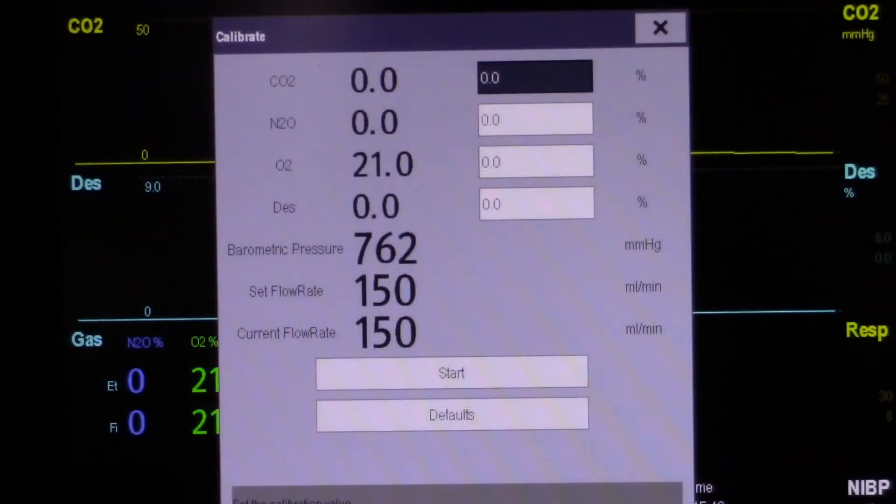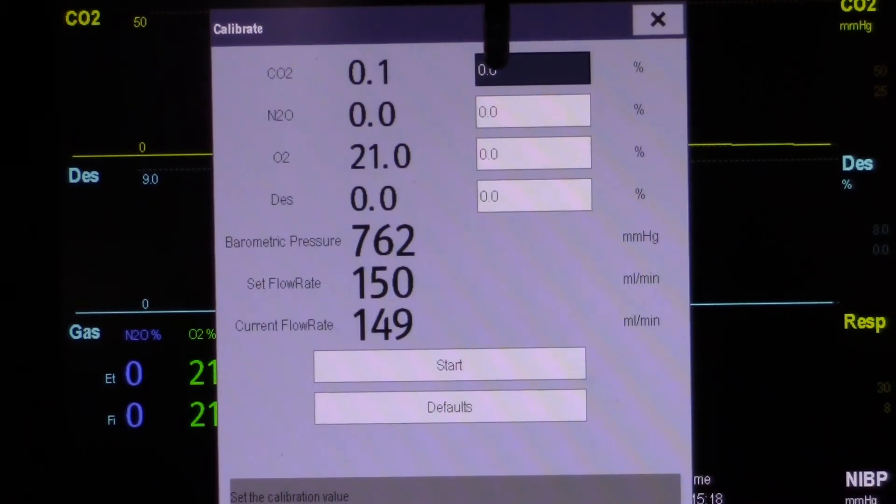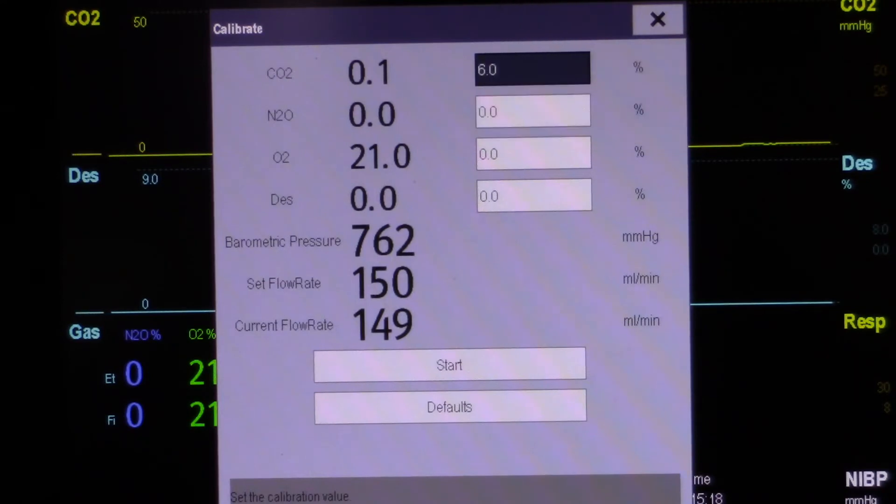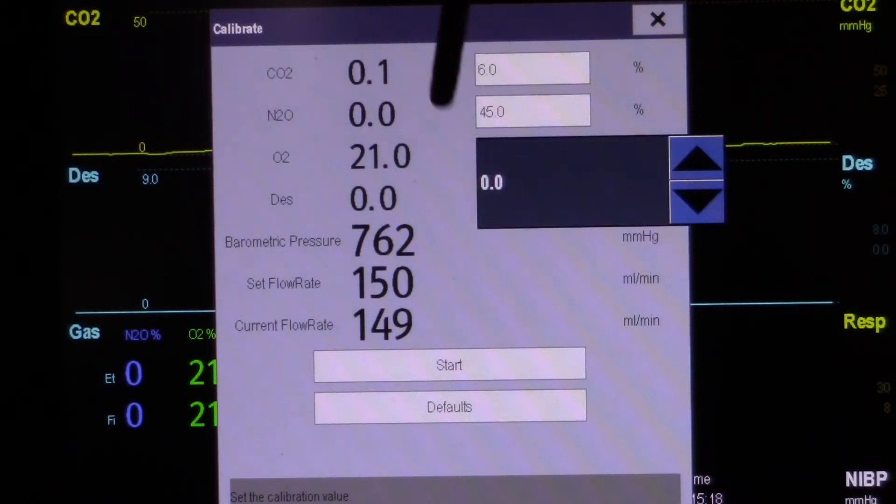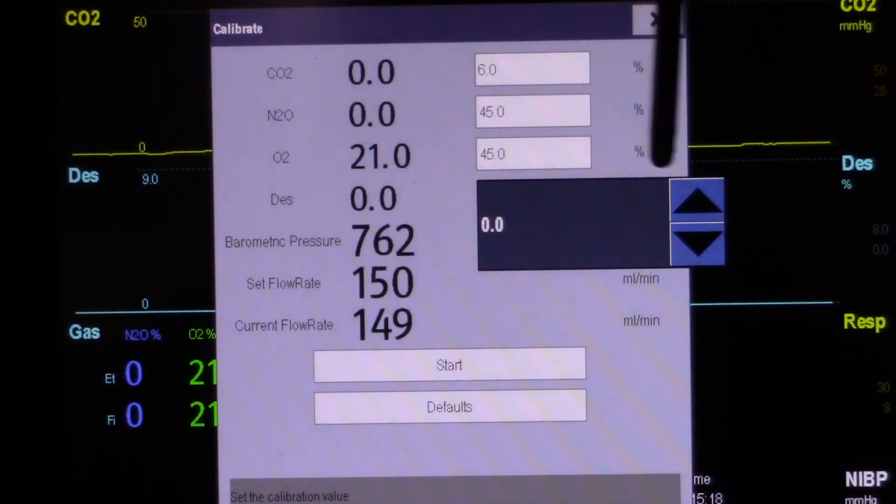Touch your gas value windows and set them to the concentration gas that you are going to apply. We are going to apply CO2 of 6%, Nitrous Oxide 45%, Oxygen 45%, and Desflurane 4%.